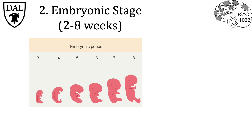Once a blastocyst implants into the uterine wall, the embryonic stage begins. At this point, the growing bundle is termed an embryo. This stage is marked by the formation of major organs, including the nervous system, the heart, eyes, ears, arms, legs, teeth, palate, and external genitalia. The embryonic stage lasts until about eight weeks after conception, where it then leads into the fetal stage.